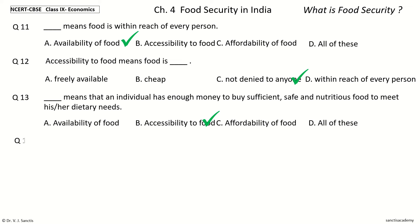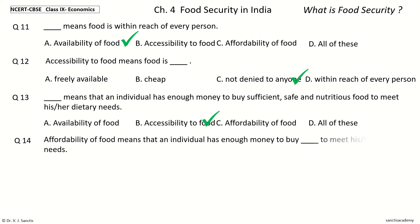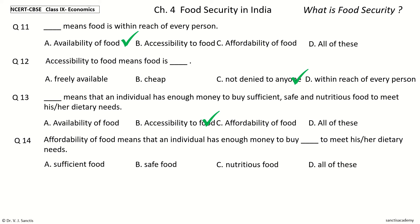Question 14: Affordability of food means that an individual has enough money to buy dash to meet his or her dietary needs. The options are: sufficient food, safe food, nutritious food, all of these. Your time to choose. And the answer is all of these. So affordability of food means that an individual has enough money to buy sufficient food, safe food, and nutritious food to meet his or her dietary needs.